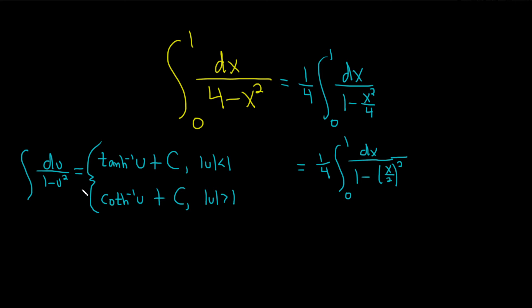Now let's focus on making this match this. So now we'll make our u substitution. We'll let u be equal to x over 2. And then du, well the derivative of x is 1, so you just get 1 half dx.